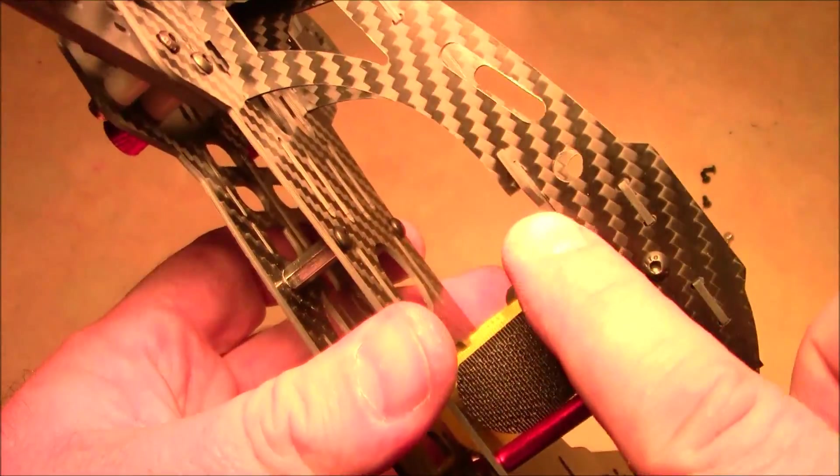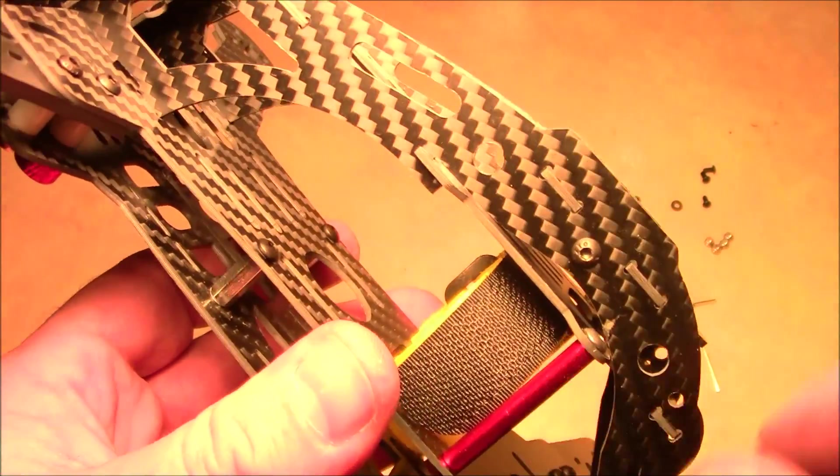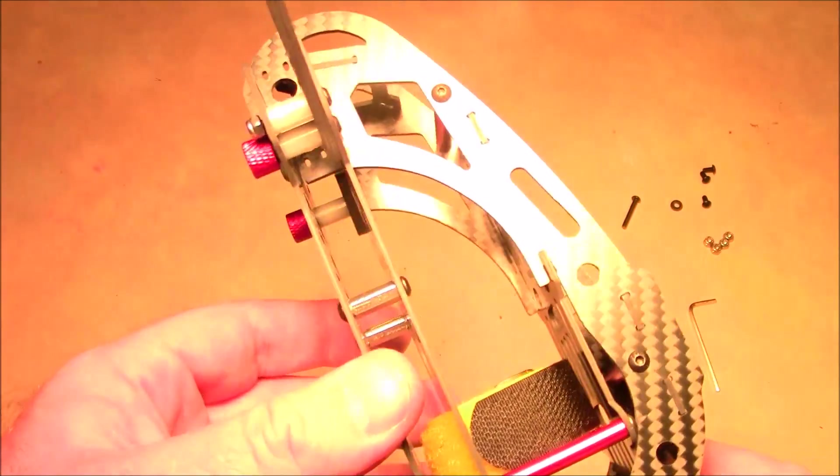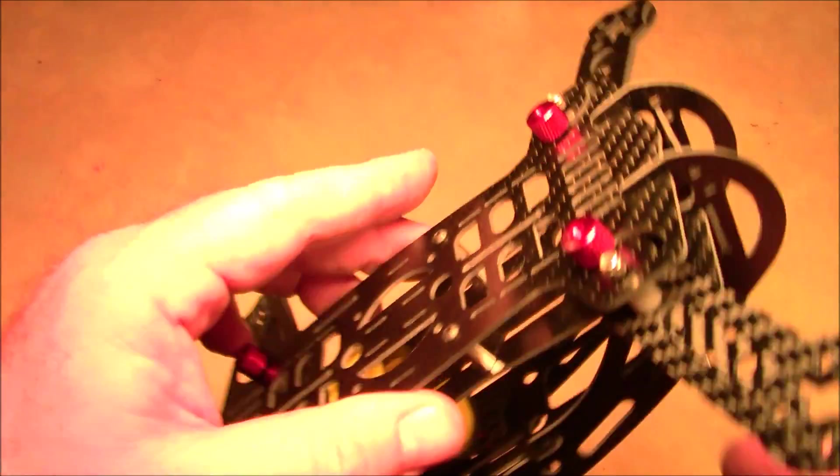This part here has a little hook that goes onto a little hook here, and that was kind of tight getting that in. But those are probably the two hardest parts - just right there where they slide together on both sides and then right here.